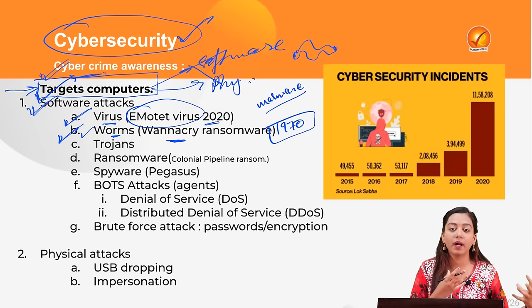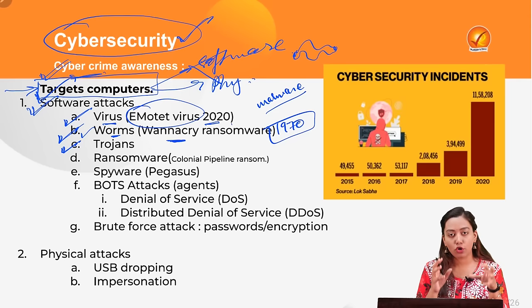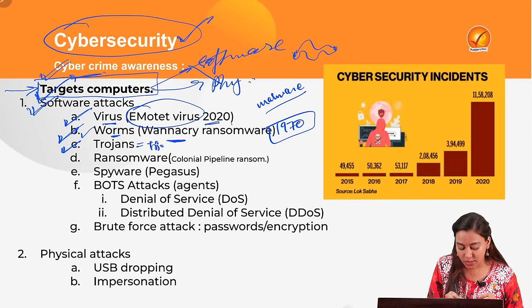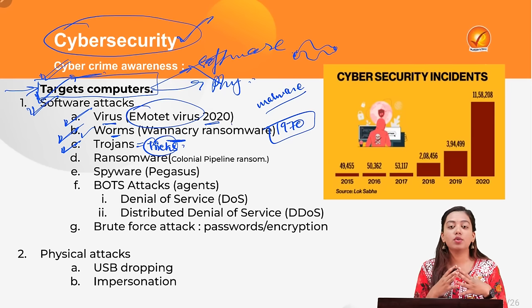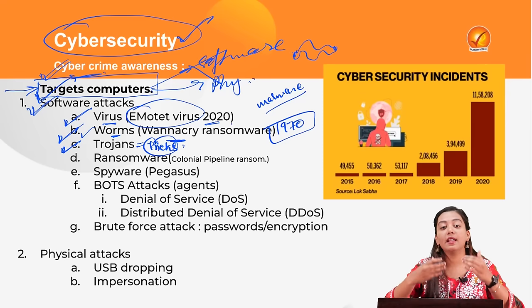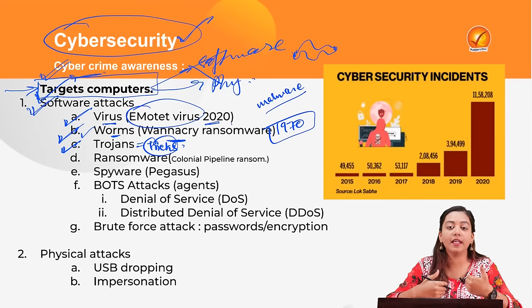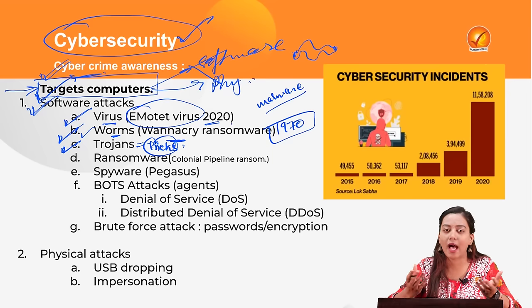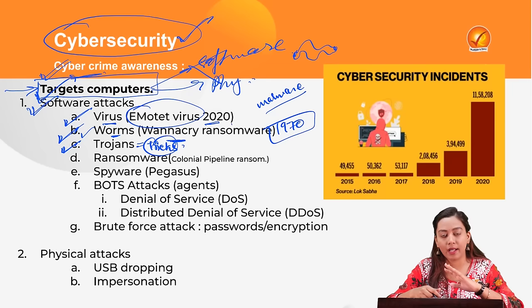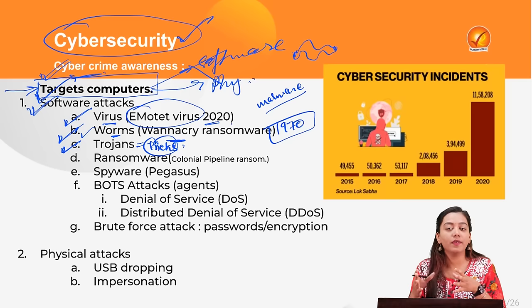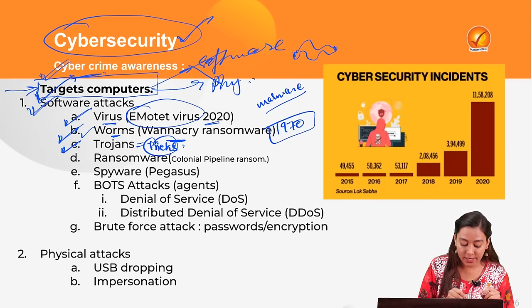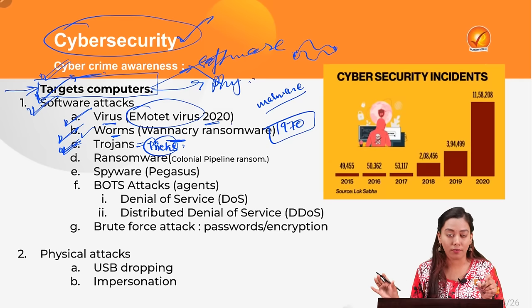Next are trojans — 'T for Trojan, T for tricks.' These are malwares which appear as legitimate software but perform malicious activities in the background. For example, you might be lured to install an astrology app that instead of providing astro data steals all your data. It appeared legitimate but performed malicious activity — hence these are known as trojans.